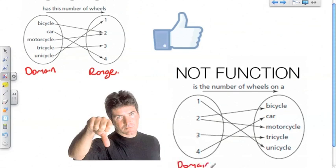Remember the domain being the first set of data. If we look at this arrow diagram, each of the vehicles is associated with only one number in the range. Since every element in the domain is only associated with one element in the range, that is a function.